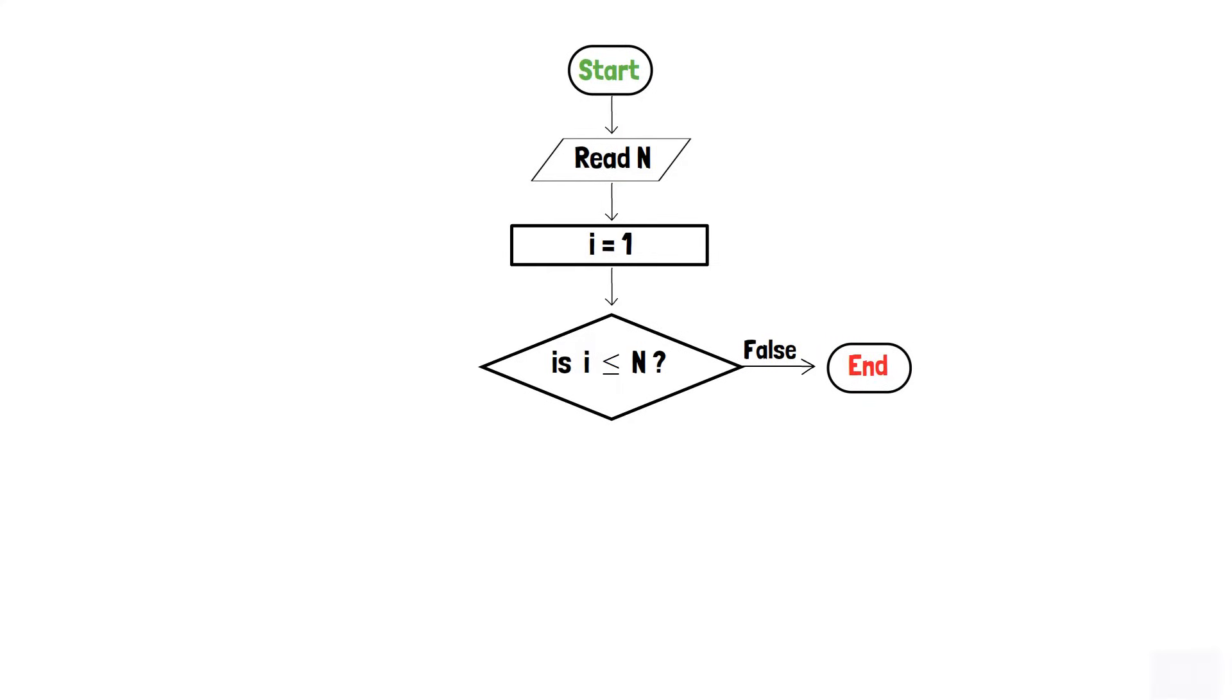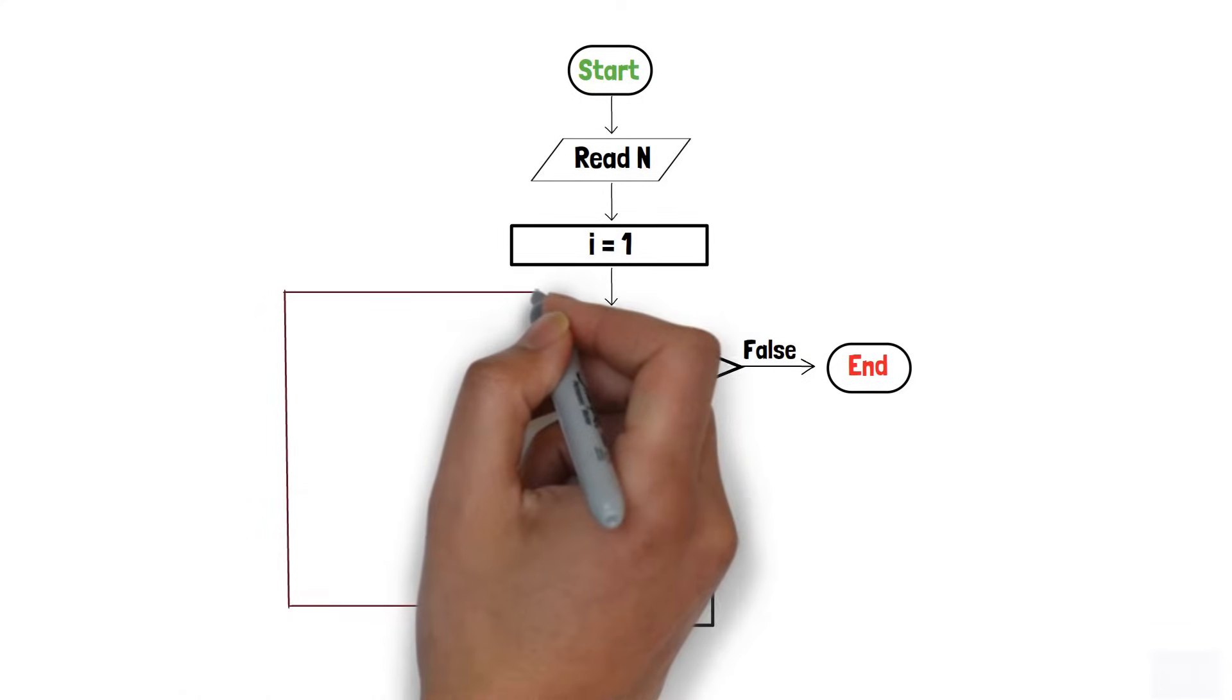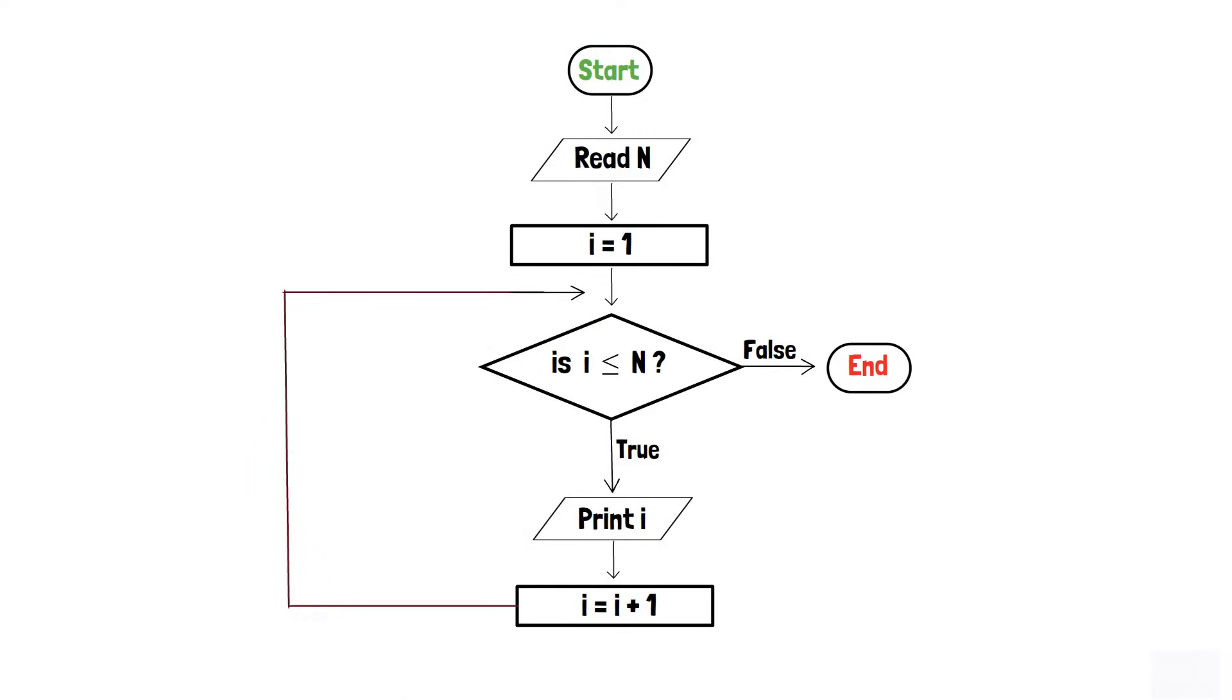If i is less than n, we will print it with the output component. Later, we will increment i by 1 in a process box. And finally, we will create a loop before the decision box in such a way that the loop will reject the value of i for each iteration.